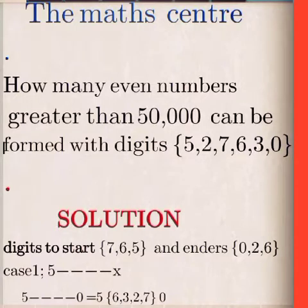For the solution, first of all, the digits which can start and give us a figure greater than 50,000 are only 7, 6, and 5.